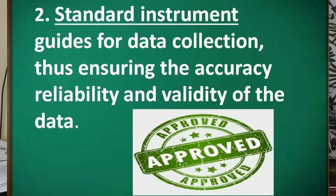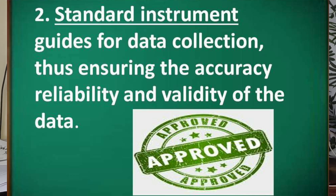The second characteristic is the standard instrument — a guide for data collection that ensures the accuracy, reliability, and validity of the data. In quantitative research, we need an approved or standard instrument. We are not the ones who will invent it; as far as possible, we replicate or adapt. This instrument could be survey tests or questionnaires to gather numerical data. We also have flowchart inventories, time-motion logs, projective device observation forms, interview schedules, checklists, and tally sheets with regards to numbers.